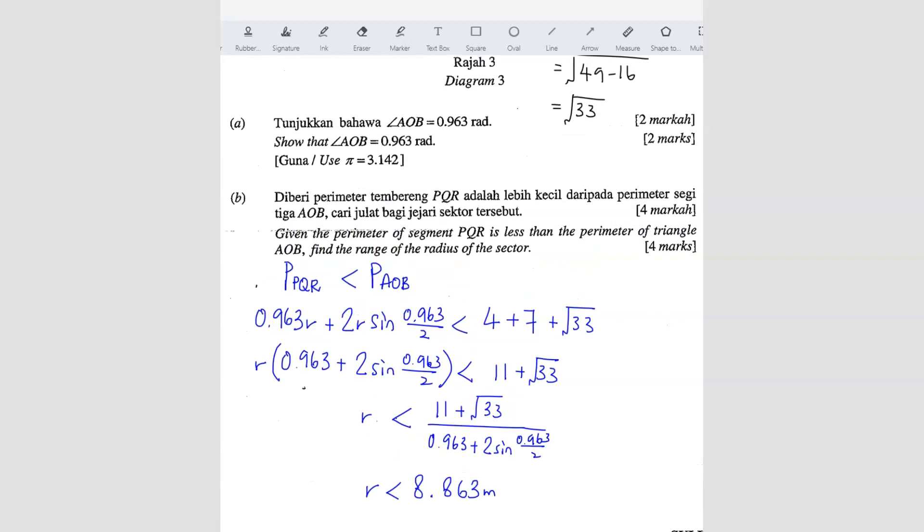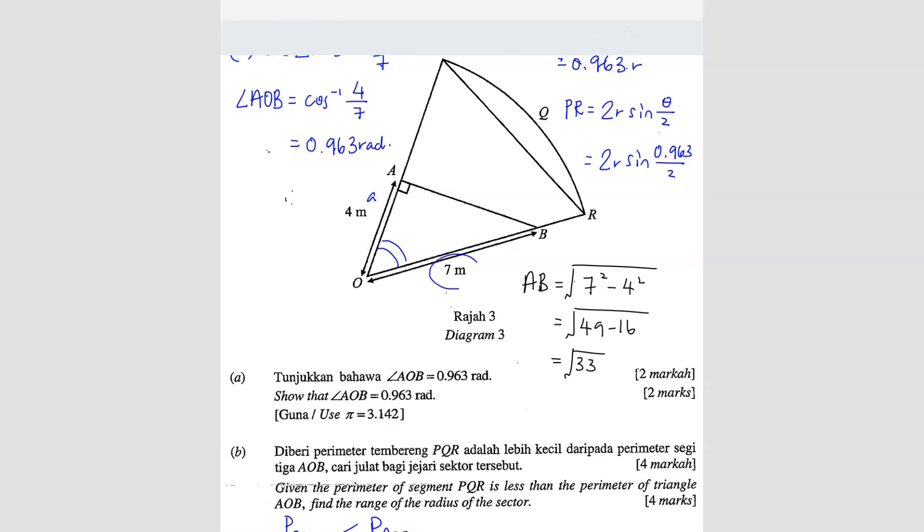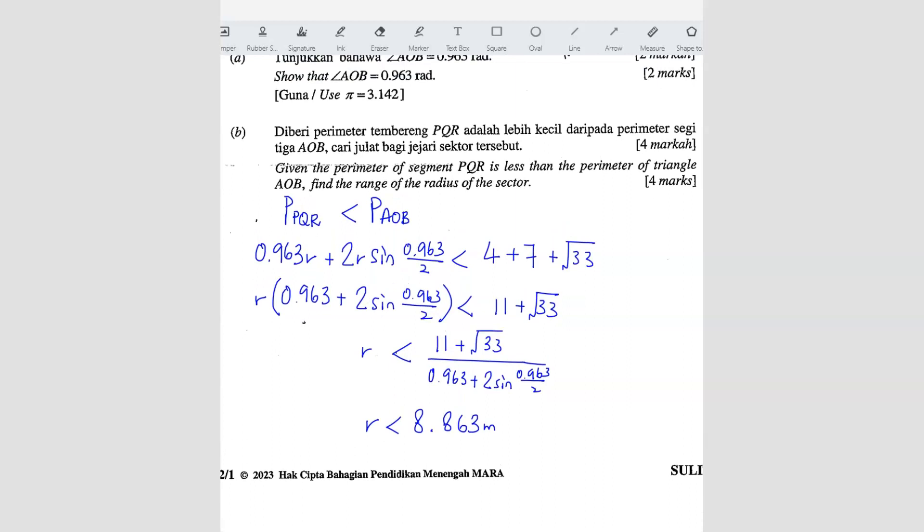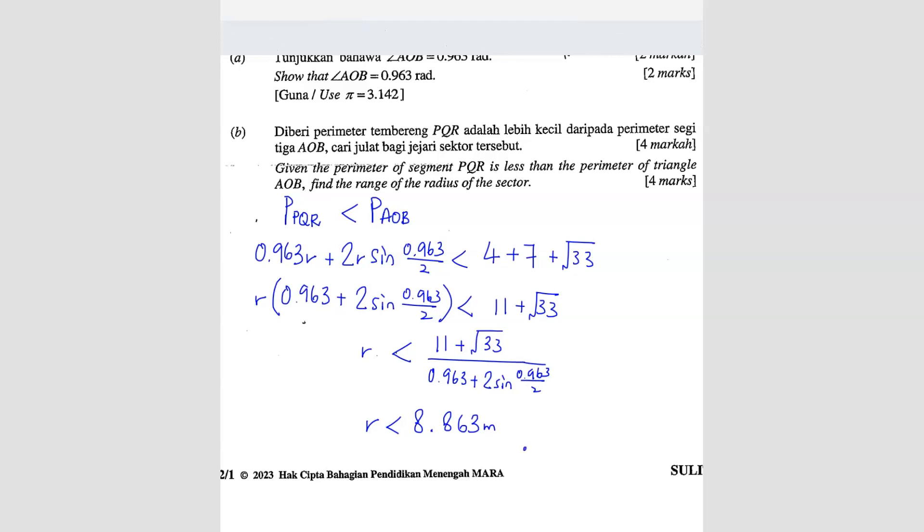So you have 8.863 meter. What's the answer for the range? We know that here is already 7. So we know that R is going to be more than 7 but less than 8.863, because this is the answer we got. But we also know that this length here, OB, is already 7, so it cannot be less than 7. So the answer is, you can write your final answer: R must be between 7 and 8.863 meter.